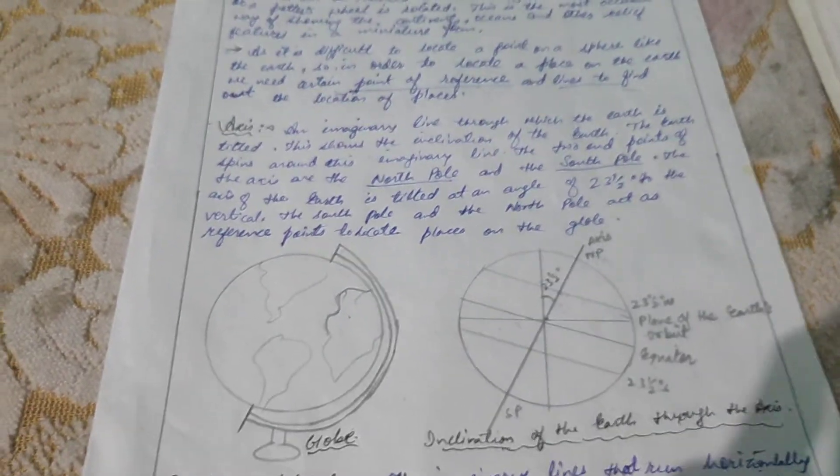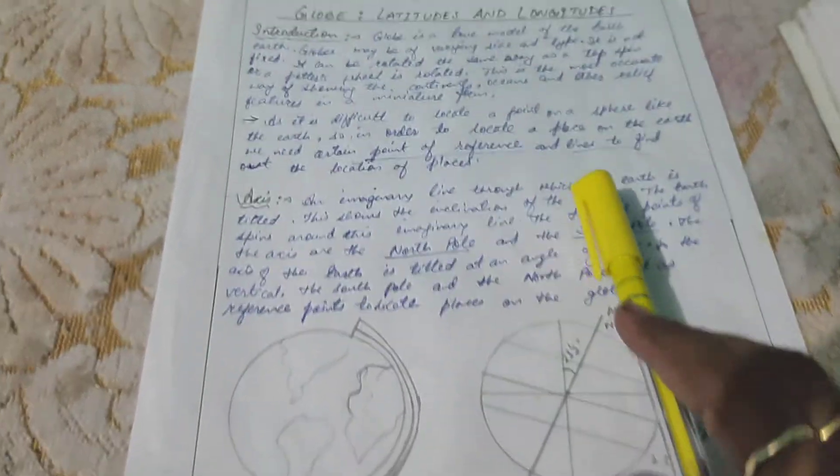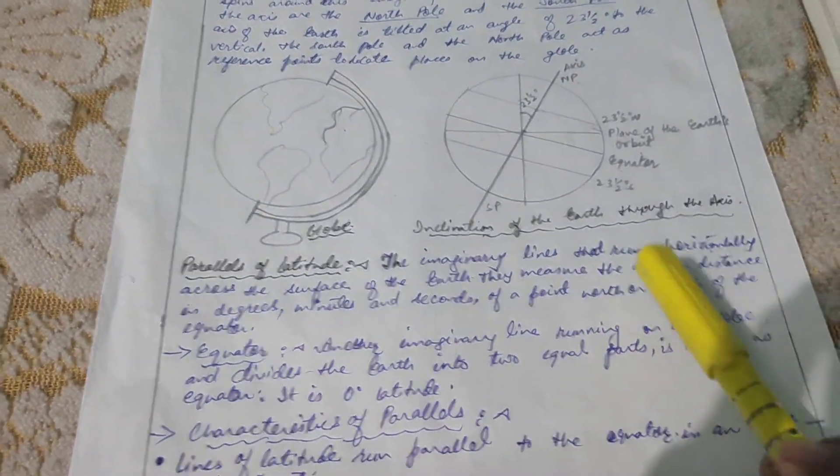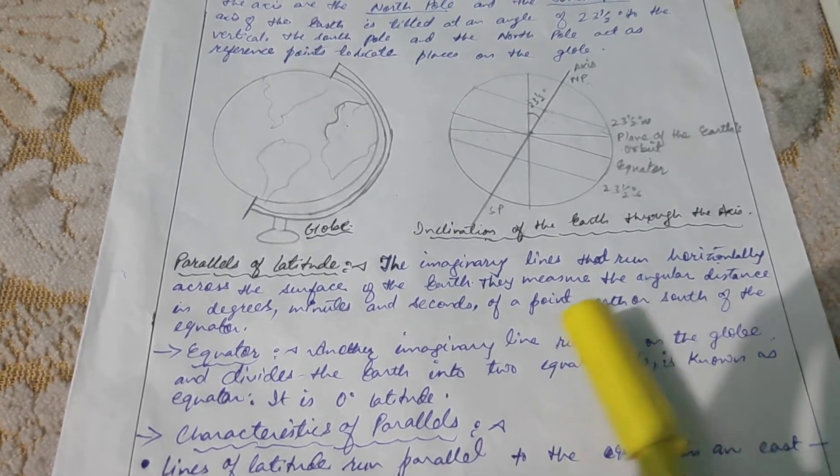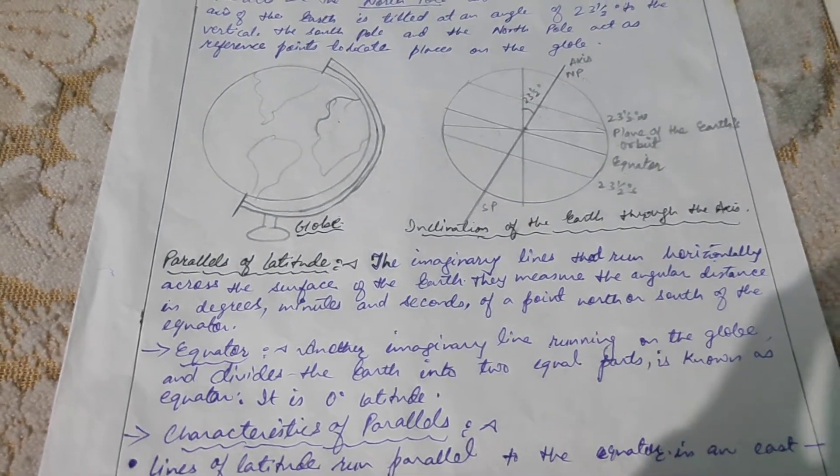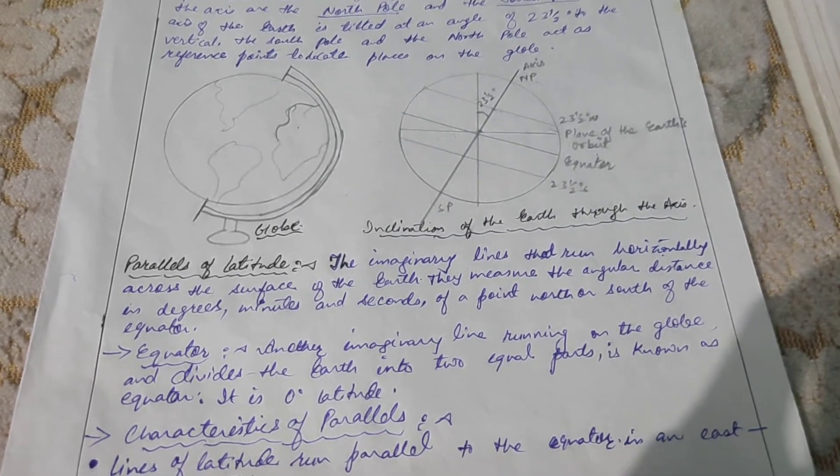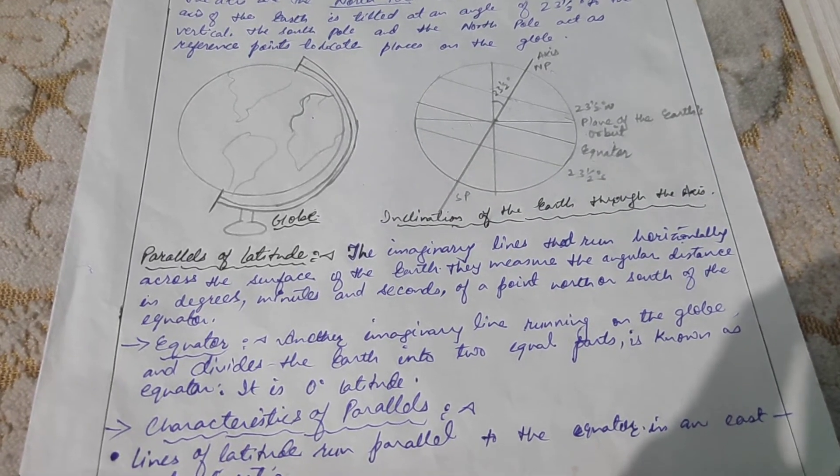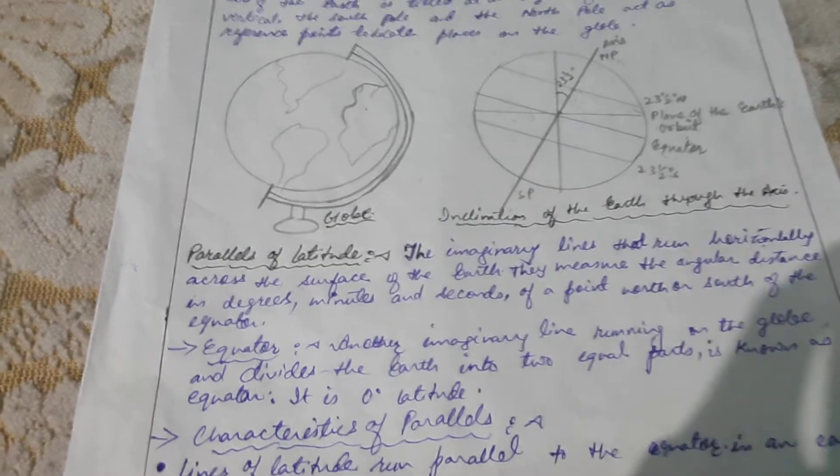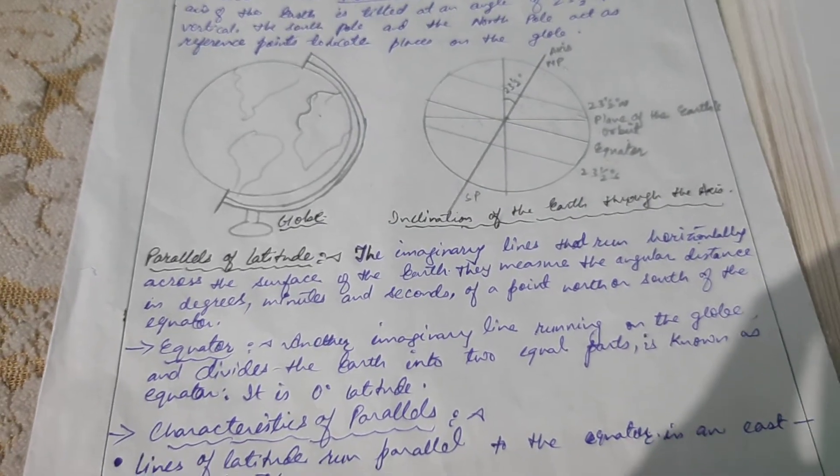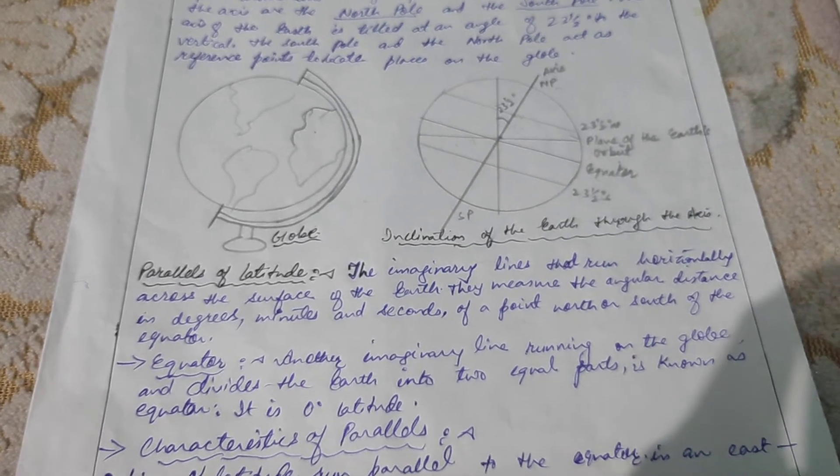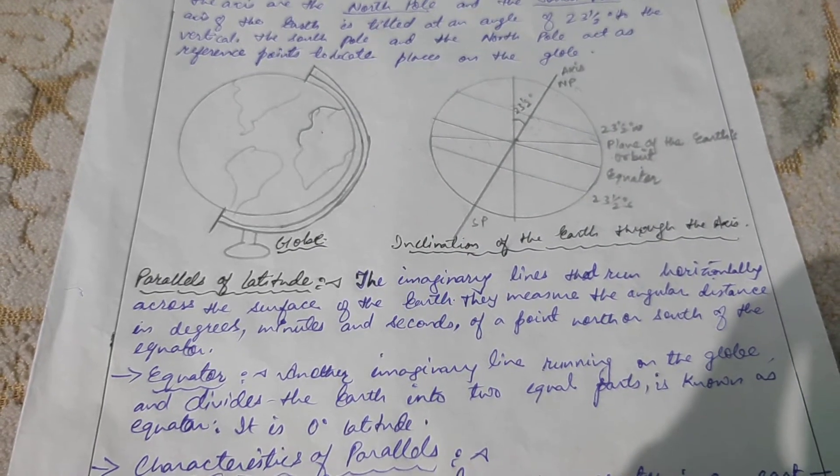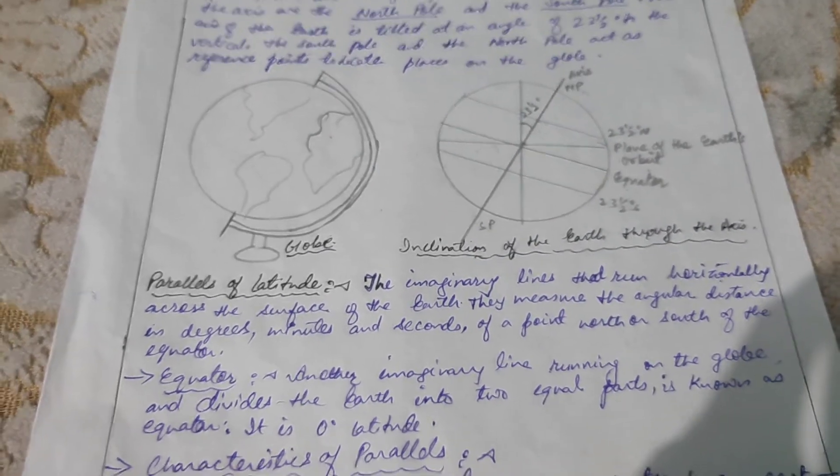This picture gives a clear image of the inclination of the Earth. Another important thing which helps us to find out the location of place is parallels of latitude. What are parallels of latitude? The imaginary lines that run horizontally across the surface of the Earth. They measure the angular distance in degrees, minutes and seconds of a point north or south of the equator. Equator is also an imaginary line running on the globe and divides the Earth into two equal parts. It is zero degree latitude.